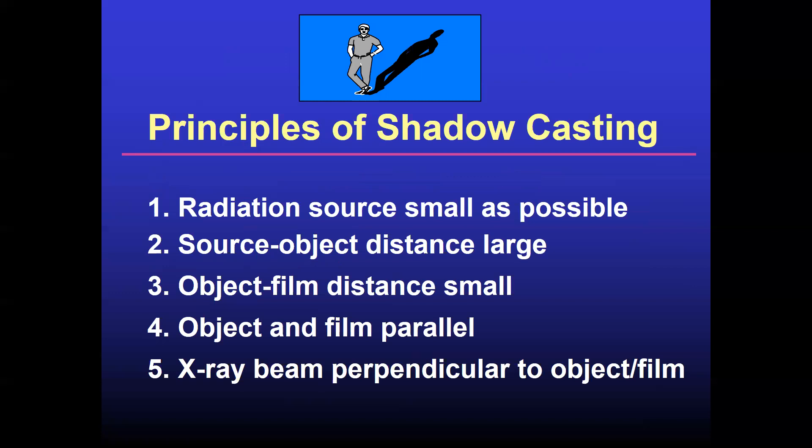So what are the principles of shadow casting? The radiation source should be as small as possible. Second one is the source object distance should be large. Object film distance should be small. Object and film should be parallel.